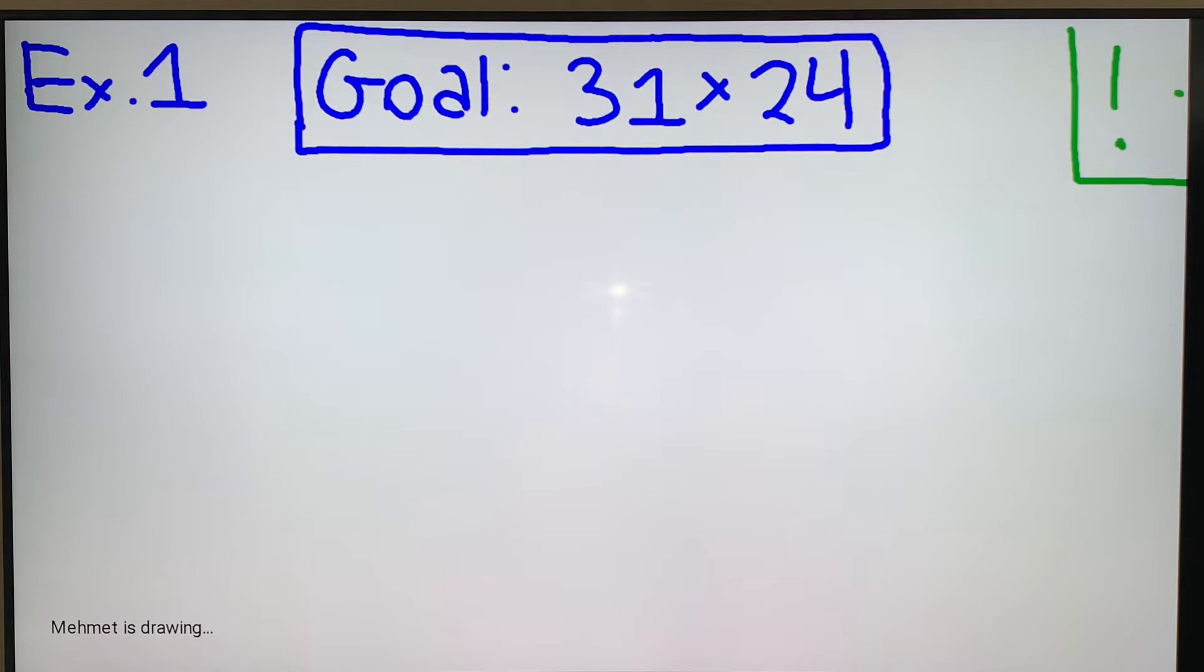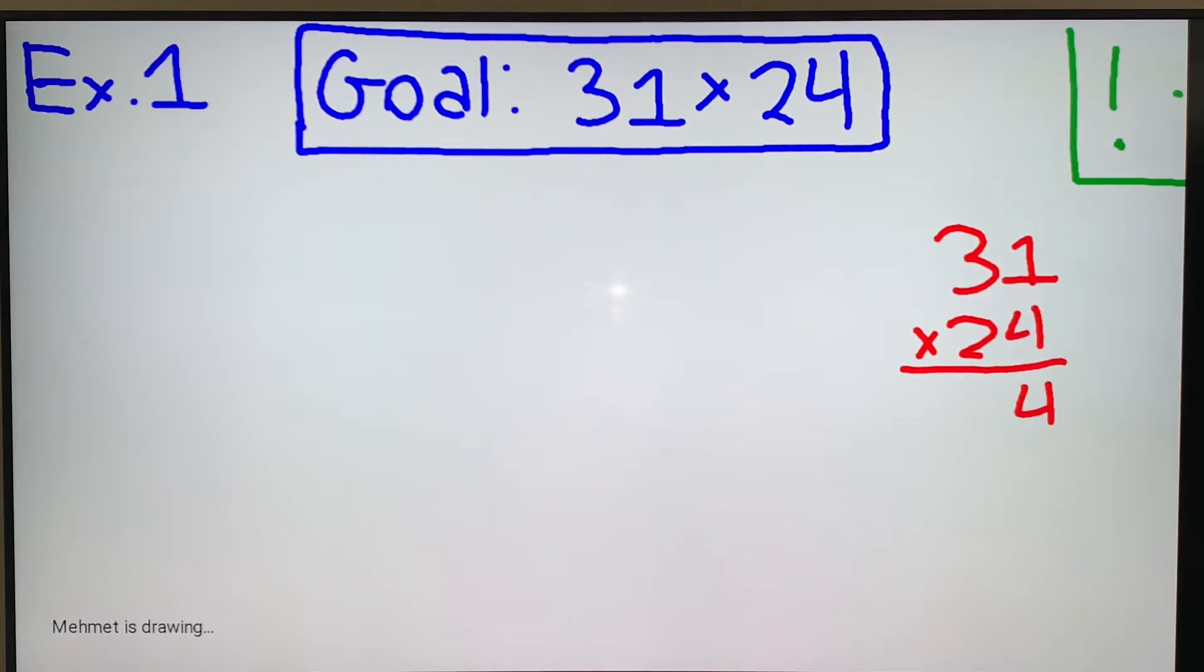So when in doubt, multiply out the numbers and see what you get. So let's multiply 31 and 24 here. And our answer here is 744.